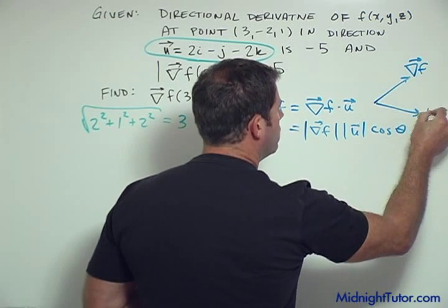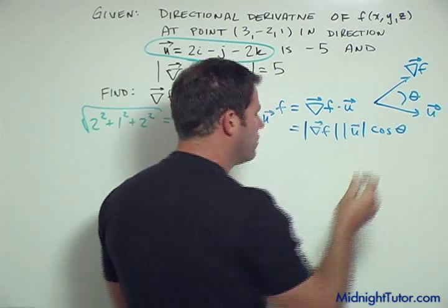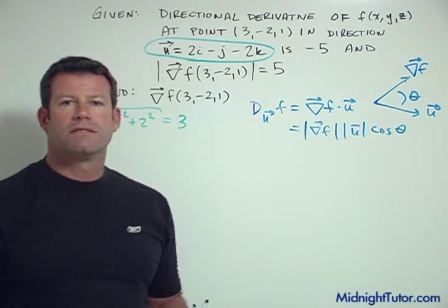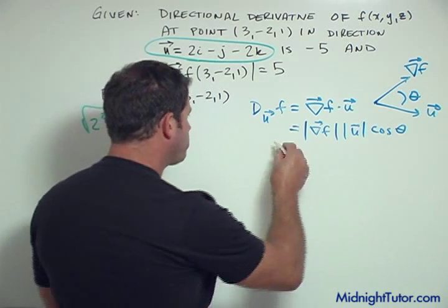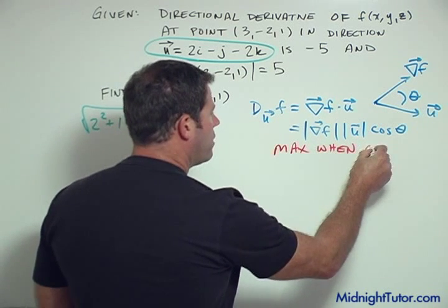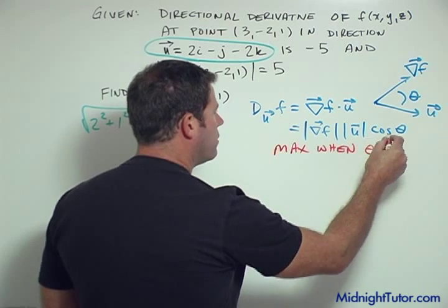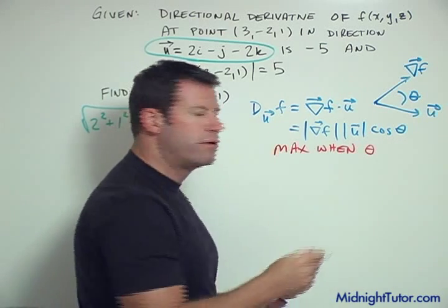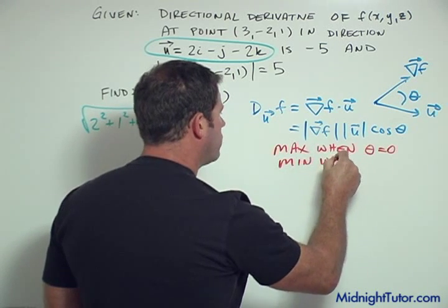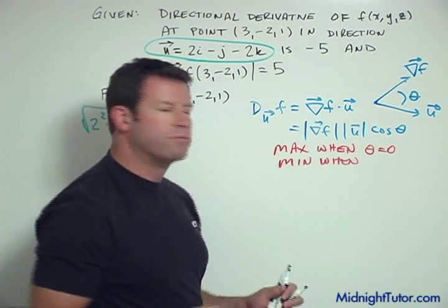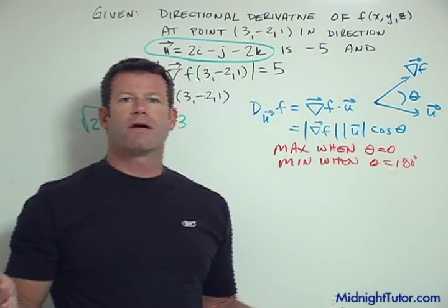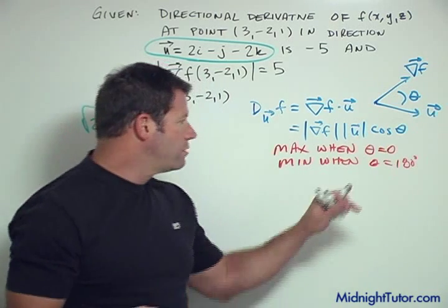So we have the magnitude of two things times cos(θ). When is this maximum? Well it's maximum when cos(θ) is 1, which would mean that theta is 0°. And it's minimum when cos(θ) is -1, which would be theta equals 180°. Cosine is never going to get bigger than 1 or smaller than -1, so those are the two maximum values.